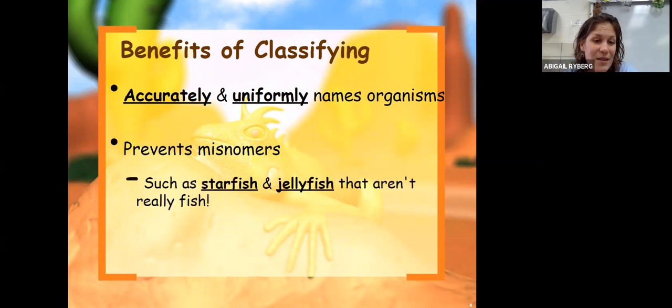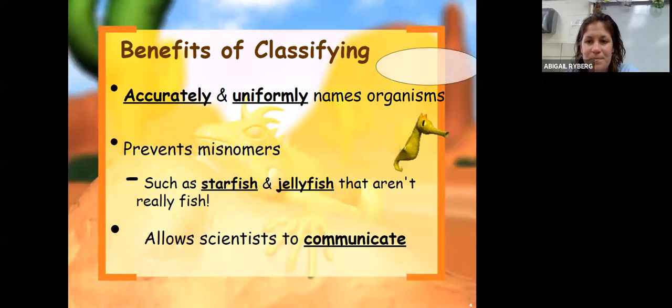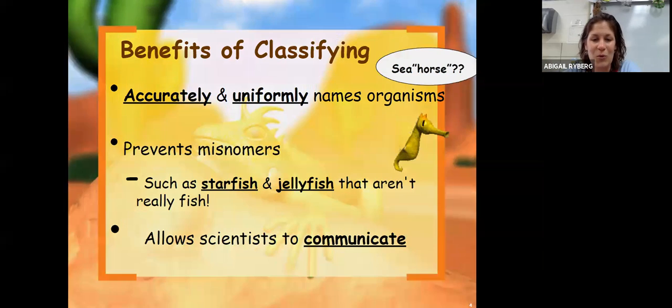It prevents misnomers like the term starfish and jellyfish that aren't really fish at all. It allows scientists to communicate because of our classification system. Scientists can share data across the globe, so no matter what language they speak, every species that has been identified and classified has the same scientific name, which is really cool.